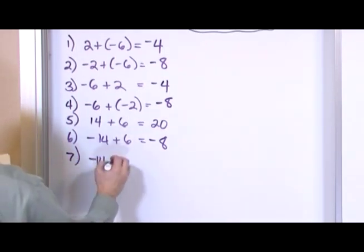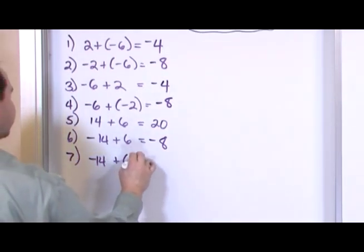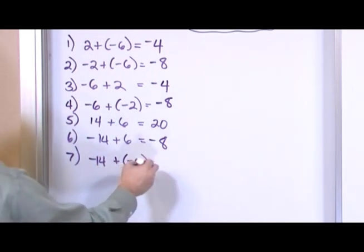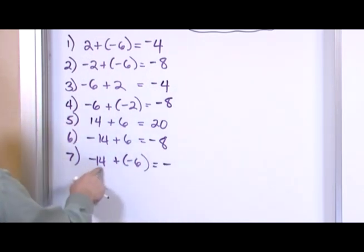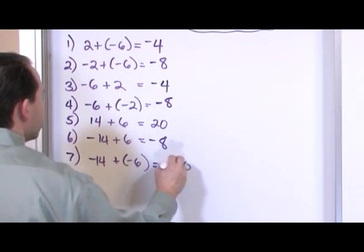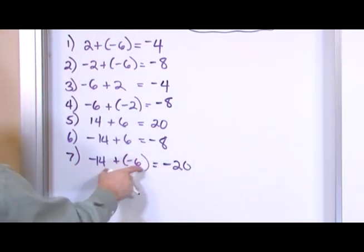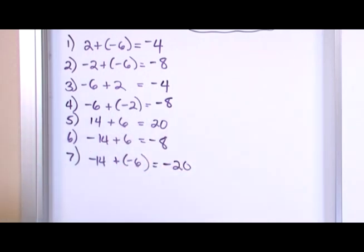Negative 14 plus negative 6. Negative plus negative is always going to give me negative. 14 plus 6 is going to be 20. So when they're the same sign, I always add the absolute values and I take the sign because it always keeps the sign of what I was adding there.